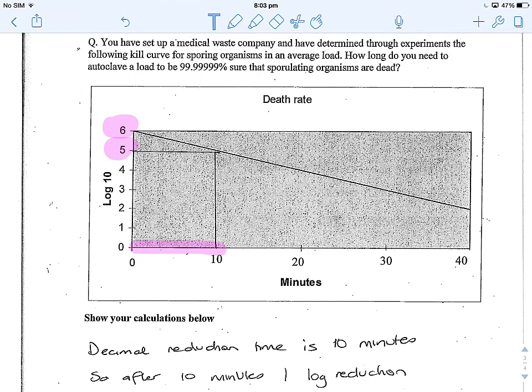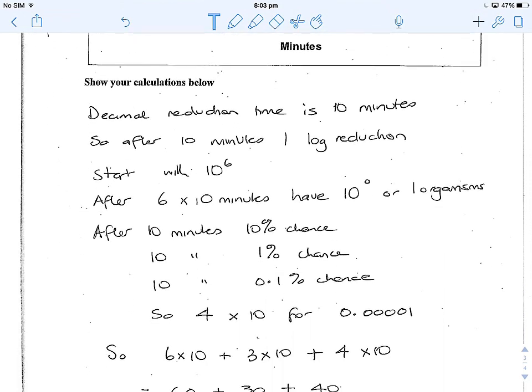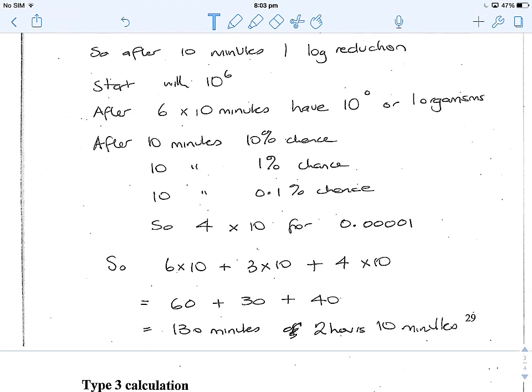Okay, so let's have a look then. We've worked out our decimal reduction time is 10 minutes and we started with 10 to the 6. Let's highlight that 10 to the 6 or a million organisms. So after 10 minutes, we'll have 10 to the 5.